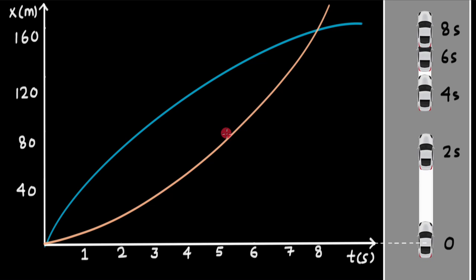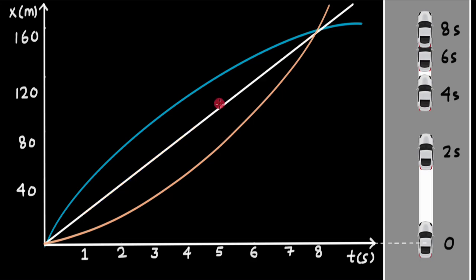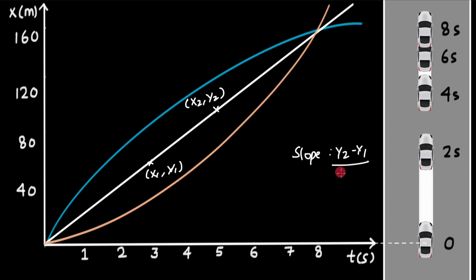But how do we talk about velocity when it is constantly changing? When we had a straight line, the velocity was not changing — it was one constant value. We could calculate that velocity by finding the slope of the straight line. If one point is (x2, y2) and another is (x1, y1), the slope is (y2 − y1) / (x2 − x1), or delta y / delta x. In the context of a position-time graph, this becomes delta x / delta t, which gives the average velocity — and for a straight line, the average velocity equals the constant velocity throughout.